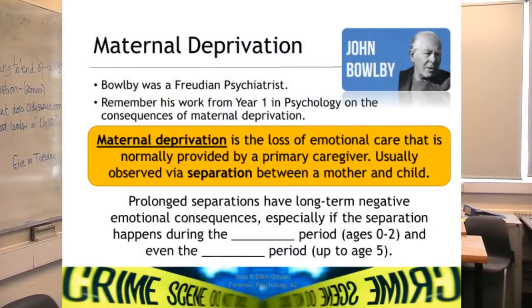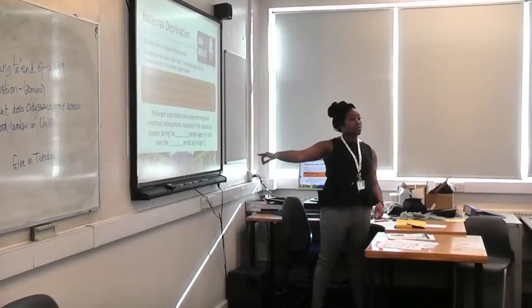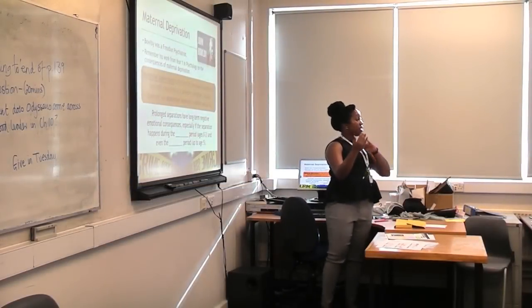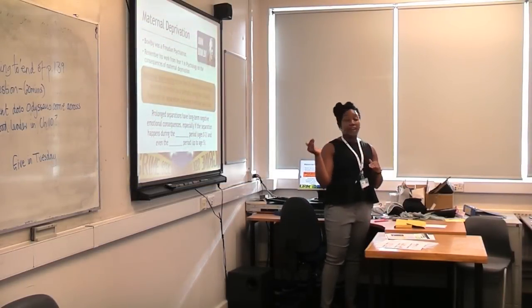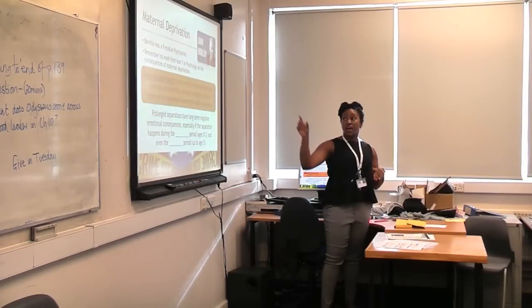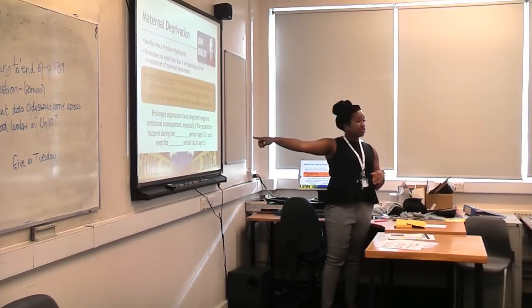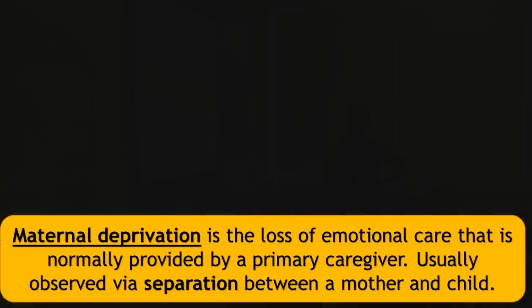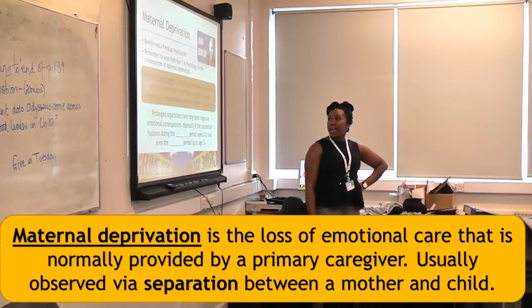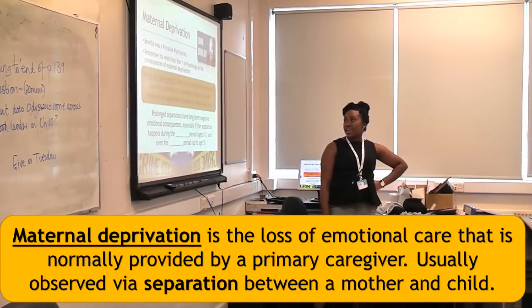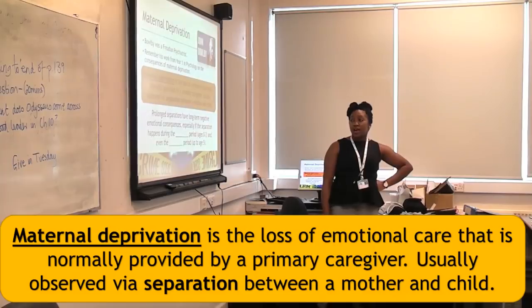The critical period ranges from zero to two years, and the sensitive period ranges from zero to five years. Maternal deprivation has to happen during those periods. Maternal deprivation is defined as the loss of emotional care that is normally provided by a primary caregiver, usually observed via separation between a mother and child.